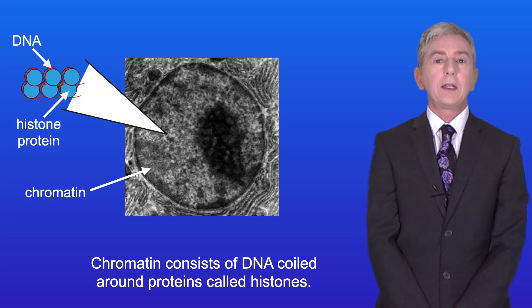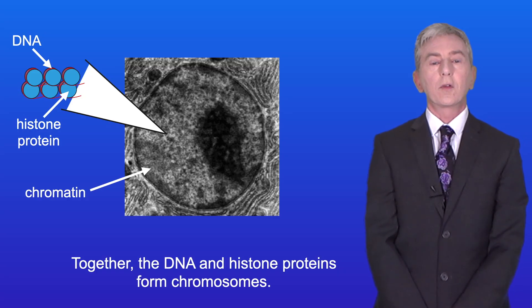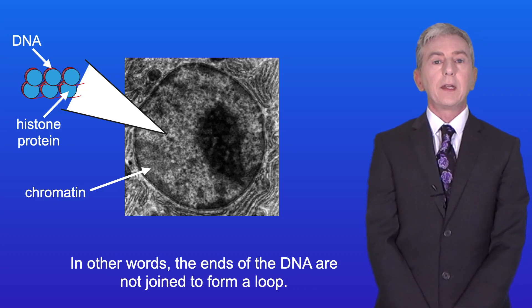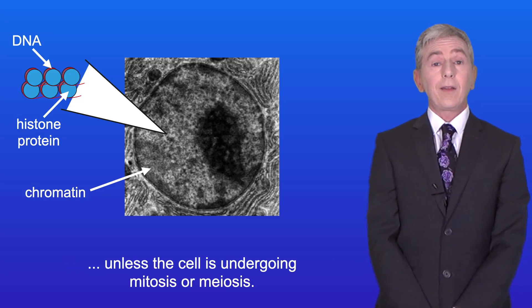Chromatin consists of DNA coiled around proteins called histones. Together the DNA and histone proteins form chromosomes. Remember that the DNA in a chromosome is a linear molecule. In other words the ends of the DNA are not joined to form a loop. You need to remember that chromosomes are not visible inside the nucleus unless the cell is undergoing mitosis or meiosis.